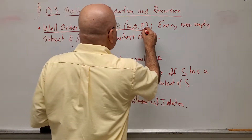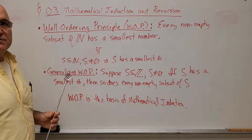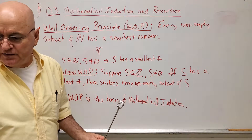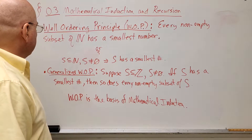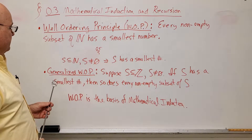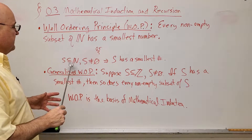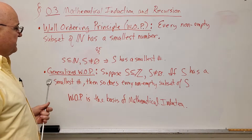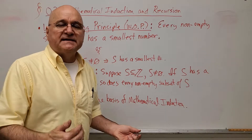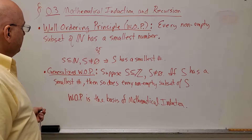The well ordering principle (WOP) is a pretty simple statement: every non-empty subset of the natural numbers has a smallest number. In symbols: if S is a subset of the natural numbers and S is not equal to the empty set, then S has a smallest number, or a least element.